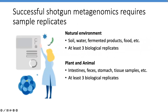Regarding replicates: because of the variability in sampling and the actual distribution of your microbes in your sample, you can treat shotgun metagenomic sequencing similarly to RNA-seq. You need similar numbers of replicates to validate whether something is being upregulated or downregulated in your sample and whether it's actually representative of the community you're looking at. Three replicates is a pretty good number across the board to shoot for.